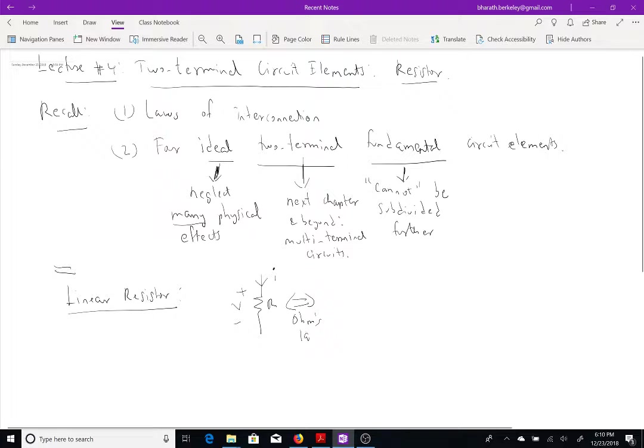The terminal behavior of a linear resistor is given by Ohm's law, which states that given this picture, the voltage developed across a linear resistor is proportional to the current flowing through it. In other words, V equals I times R, this constant R, is called the resistance, and the unit is Ohms, given by the symbol, capital Omega.